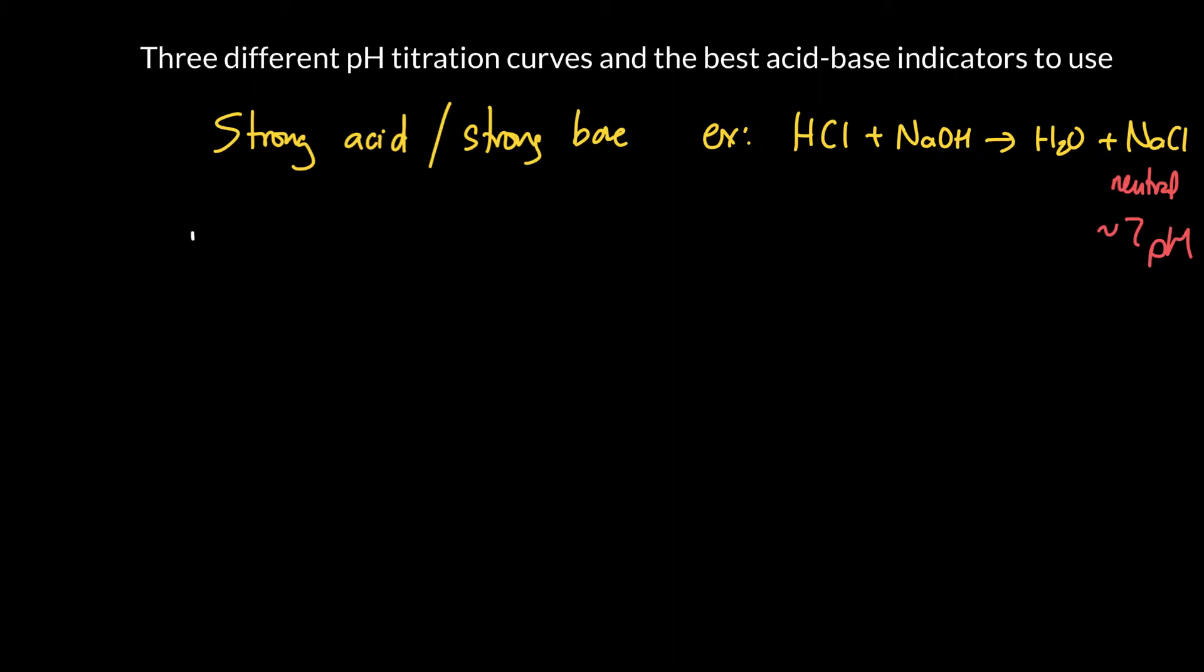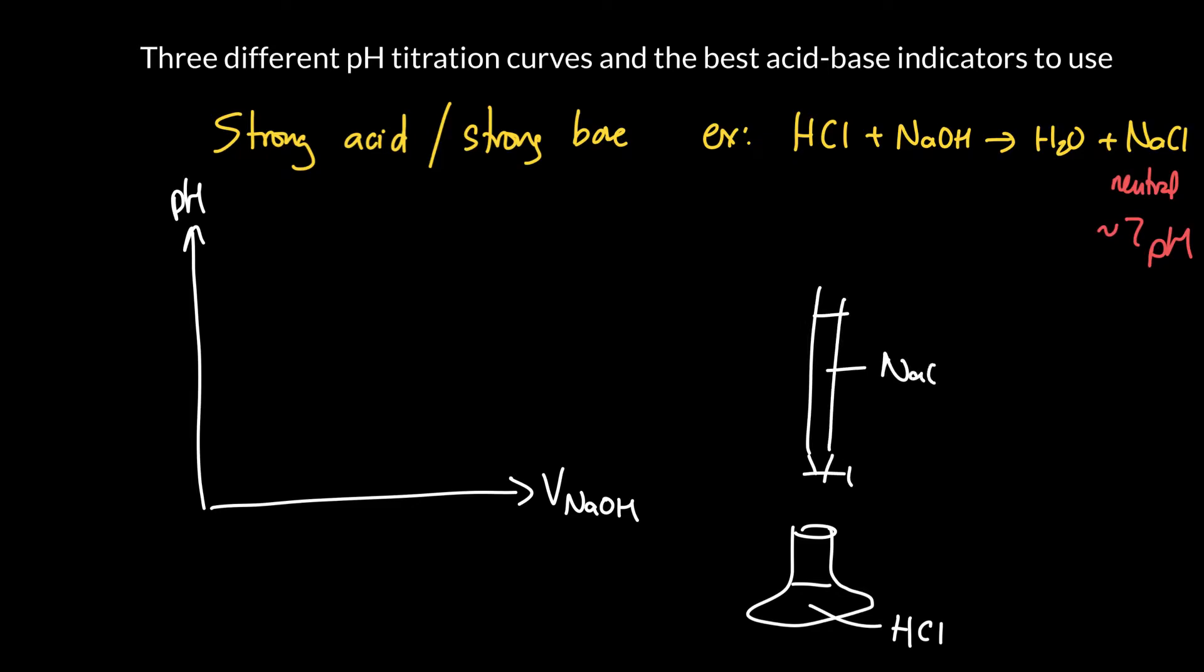Let's sketch the pH titration curve. Here's pH, here's volume of my base sodium hydroxide. I'm going to start with some acid in a flask. Here's my hydrochloric acid and I'm going to position my burette above it and fill it lovingly with sodium hydroxide and drip, drip, drip this in and watch the pH change.